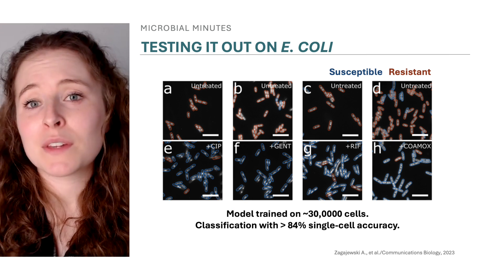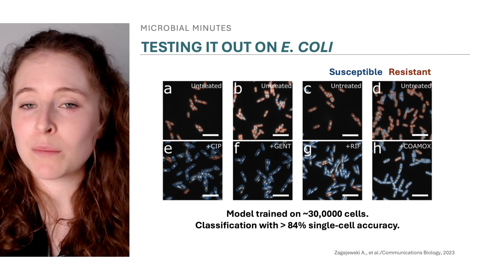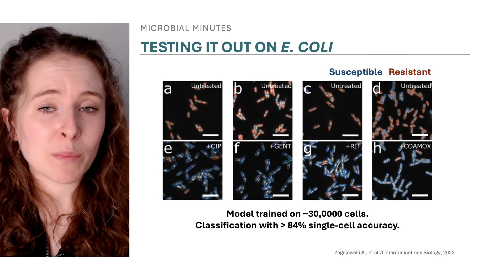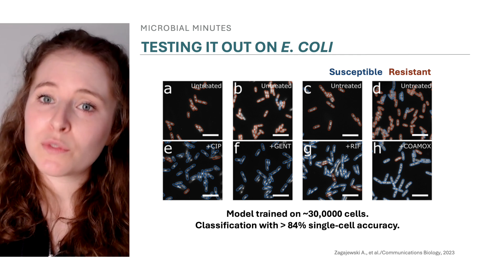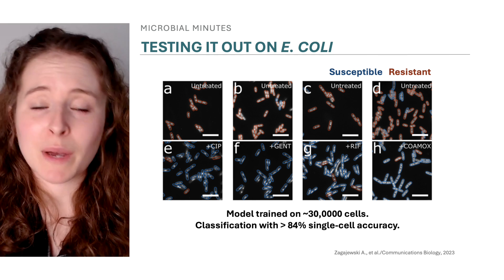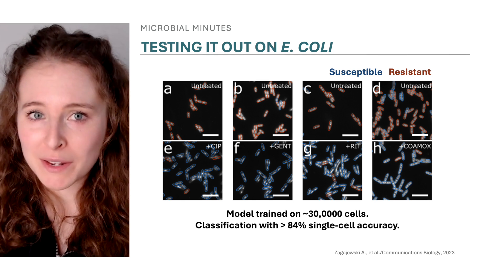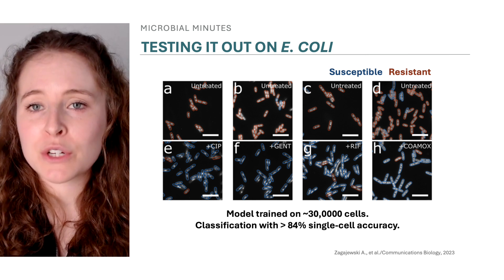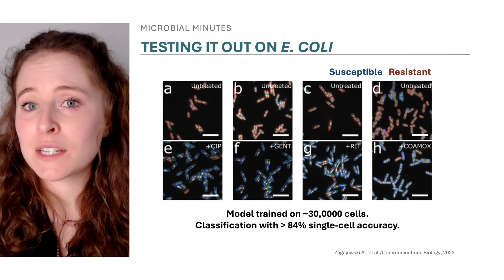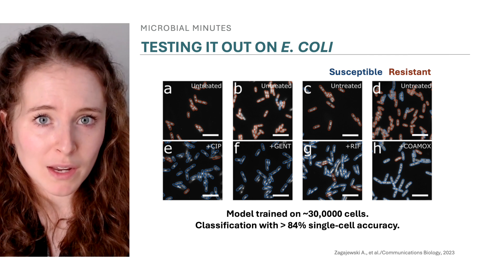The scientists put the method to the test with E. coli. Cultures of the bacterium were treated with four antibiotics with different mechanisms of action: ciprofloxacin, gentamicin, co-amoxiclav, and rifampicin, the first three of which are clinically relevant for E. coli. Each caused different changes in the bacterial chromosome. For example, treatment with concentrations of gentamicin and ciprofloxacin that exceed the MIC for each drug caused the chromosome to compact, albeit in slightly different ways. Untreated cells were used to show what a resistant chromosome looks like.